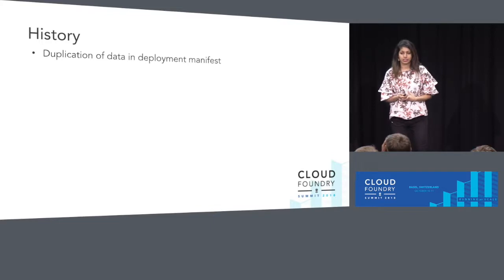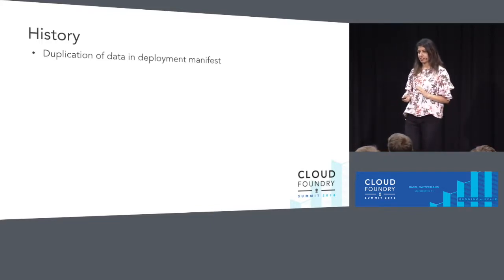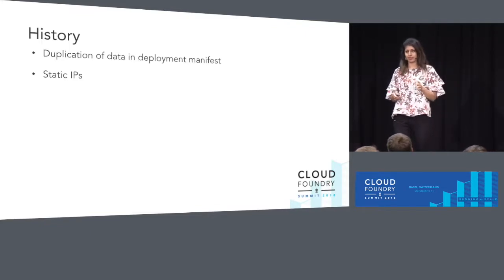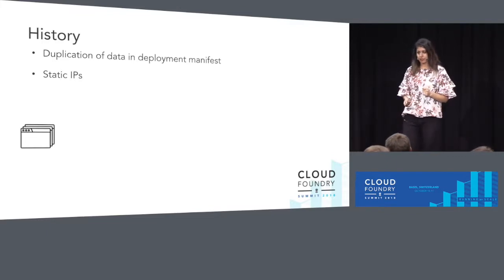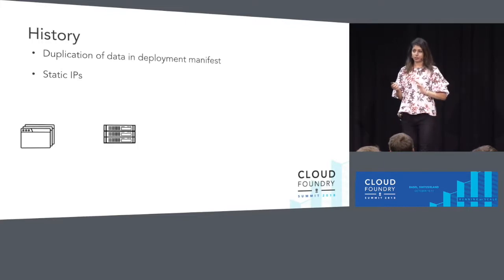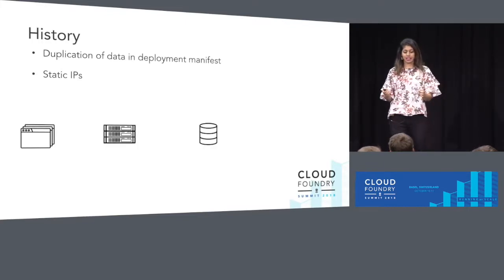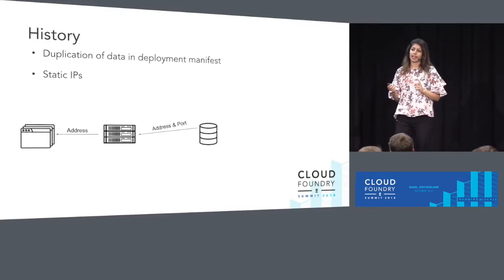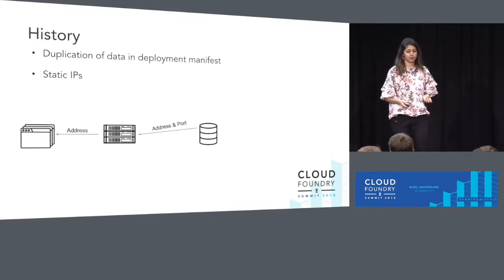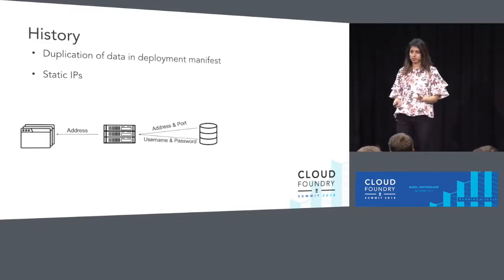Links were originally created to solve the problem of sharing data across components in the Bosch manifest. They were also created because static IPs had to be assigned to all the components in the manifest. For example, if you consider the case where you have an app client, a server, and a database — the client needs to know the address of the server, the server needs to know the address and port of the database, and the database needs to expose the username and password to the server.